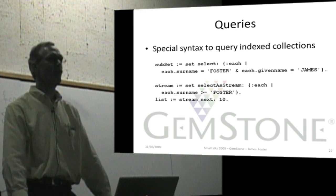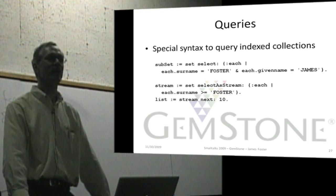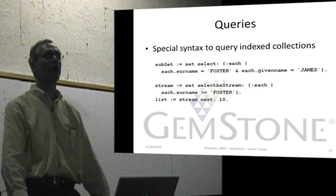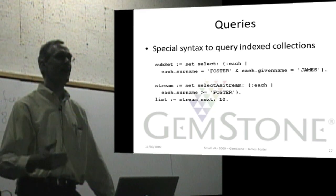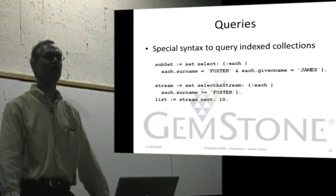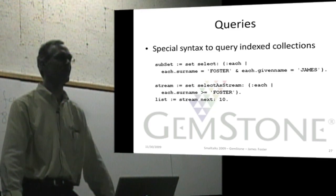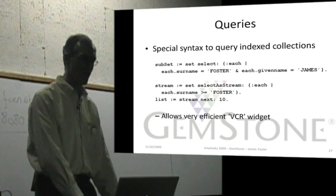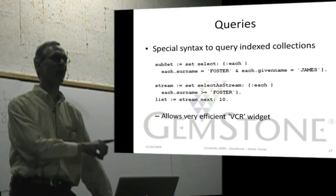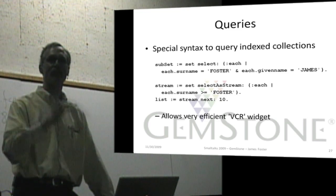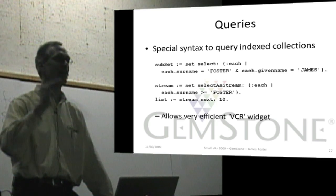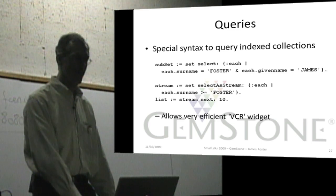You can also get a stream. If you're not sure how many objects will meet the criteria but you want to start by looking at the first one, you can say 'select as stream from each where each surname is greater than or equal to Foster.' That will get you immediately to the first one, and each time you say next it will give you another object from the collection using the specified index. This protocol gives you what we call VCR widgets, where you can click to start at the beginning, and next will give you another page — so when you're doing something like Google searches, you can look at the first page, the second page, the third page. These are very fast queries because it's using B-trees, so it can go straight to the correct point in the list.